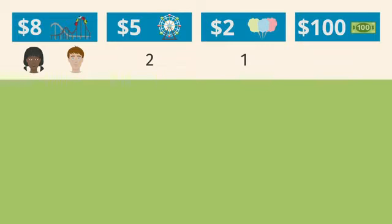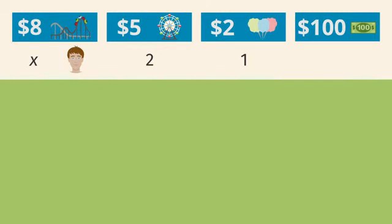We don't know the number of rides they can take on the roller coaster, so let X be Kayla's number of rides. Since Sam takes one ride less in order to get some cotton candy, his number of rides can be represented by X minus 1.